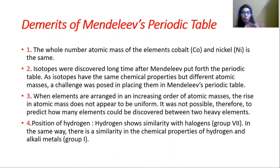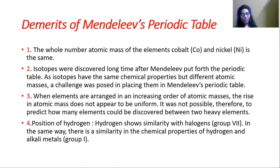Since isotopes have the same chemical properties but different atomic masses, the challenge before Mendeleev was where exactly to place such isotopes in the periodic table. This was another drawback of his periodic table.